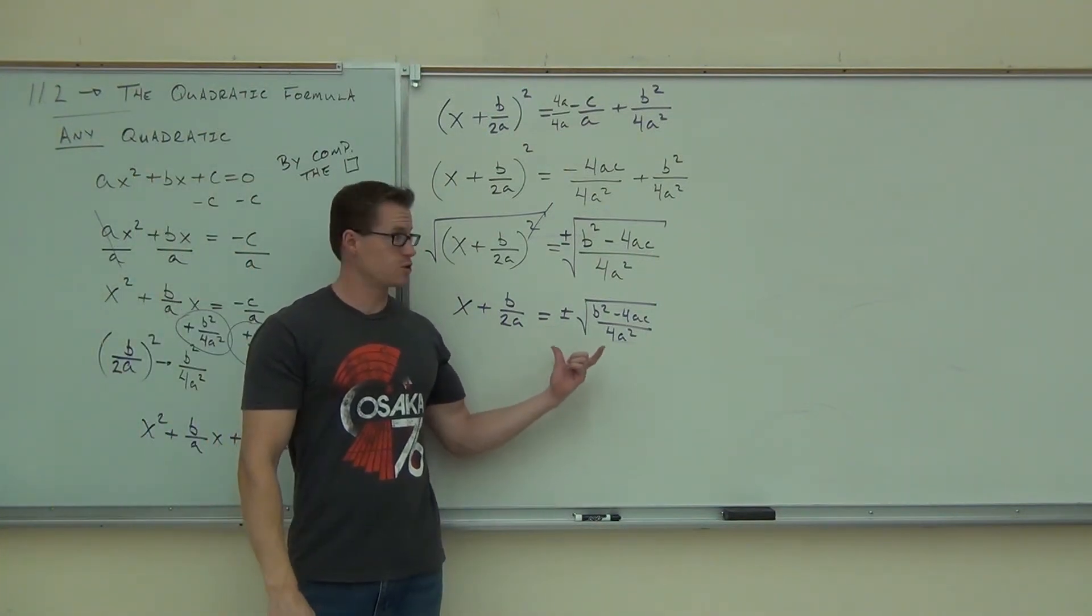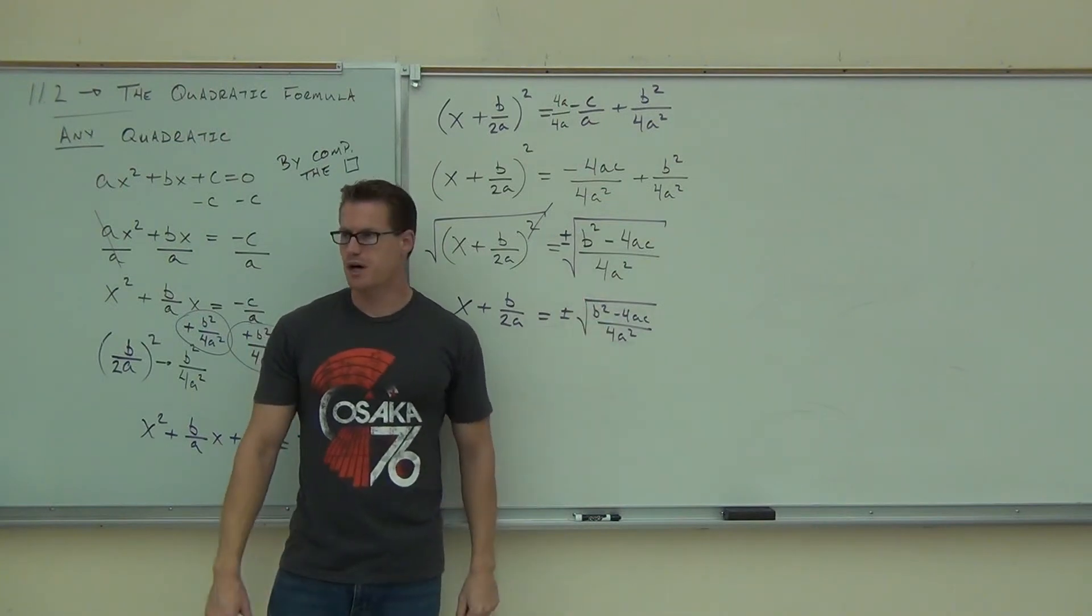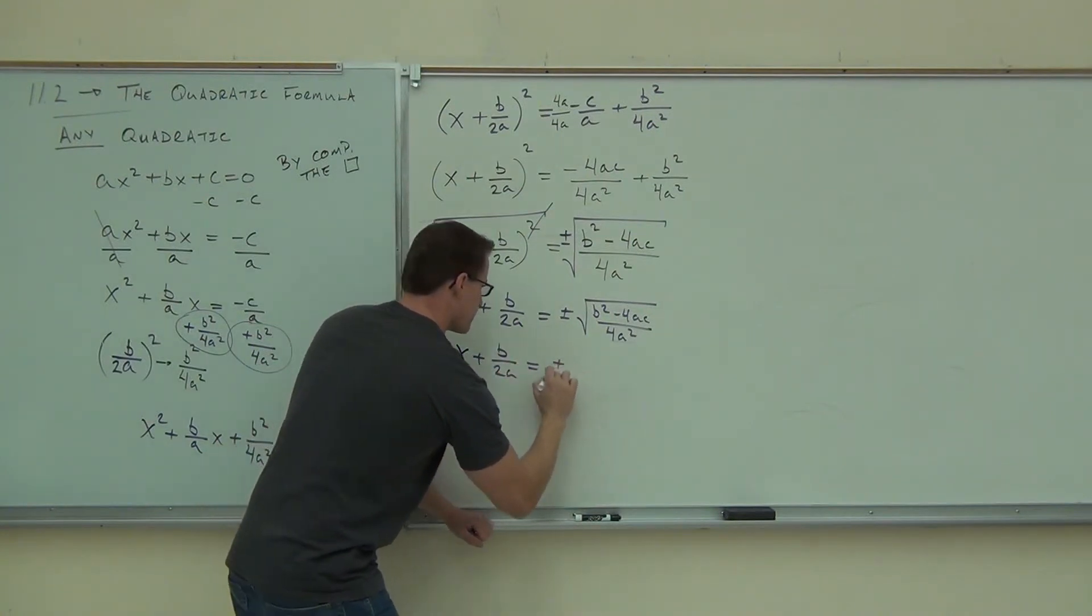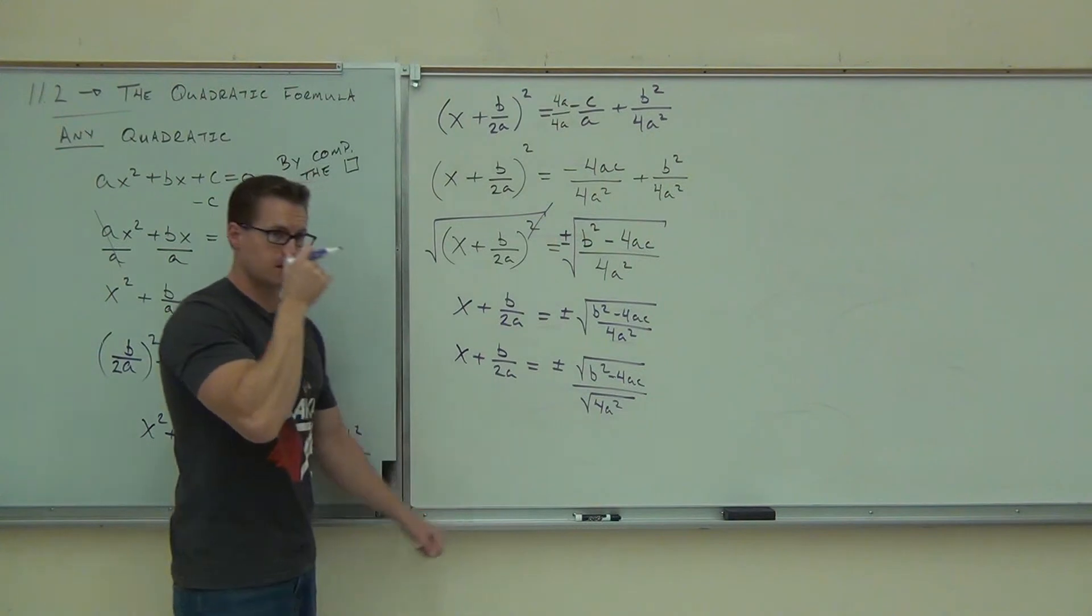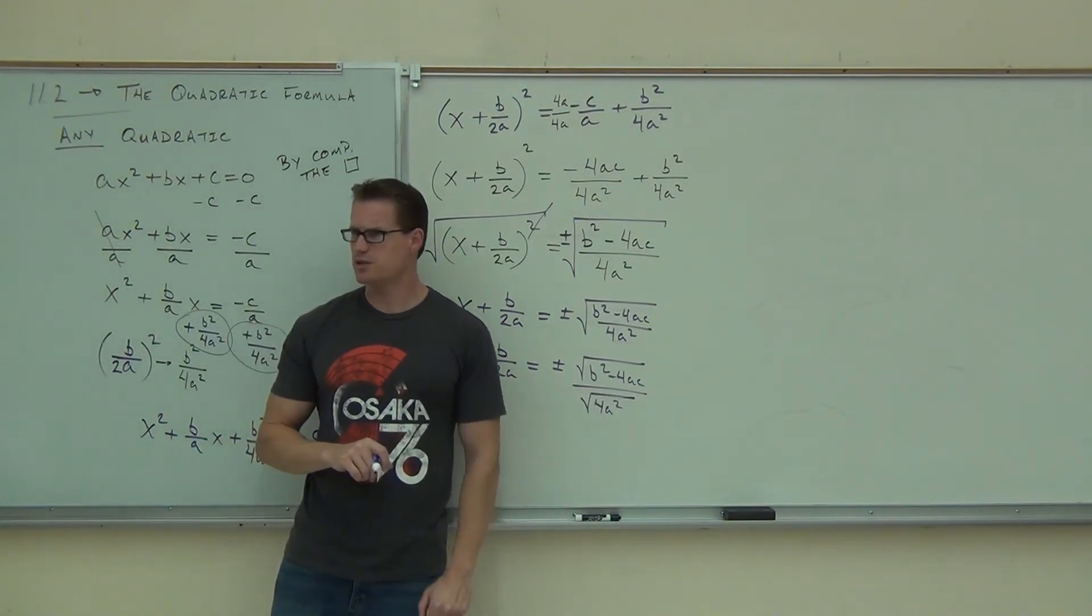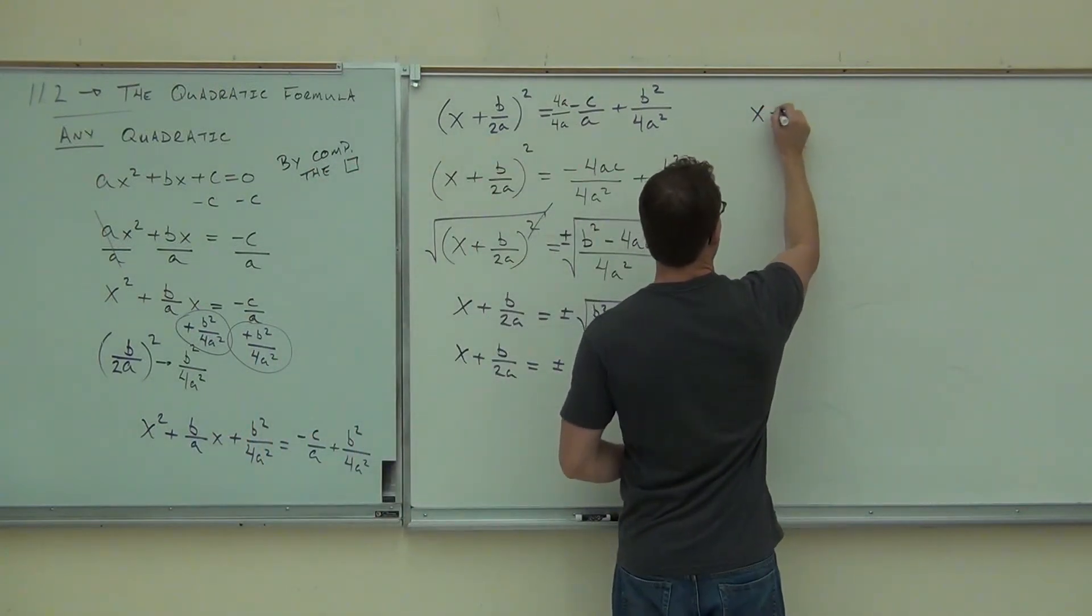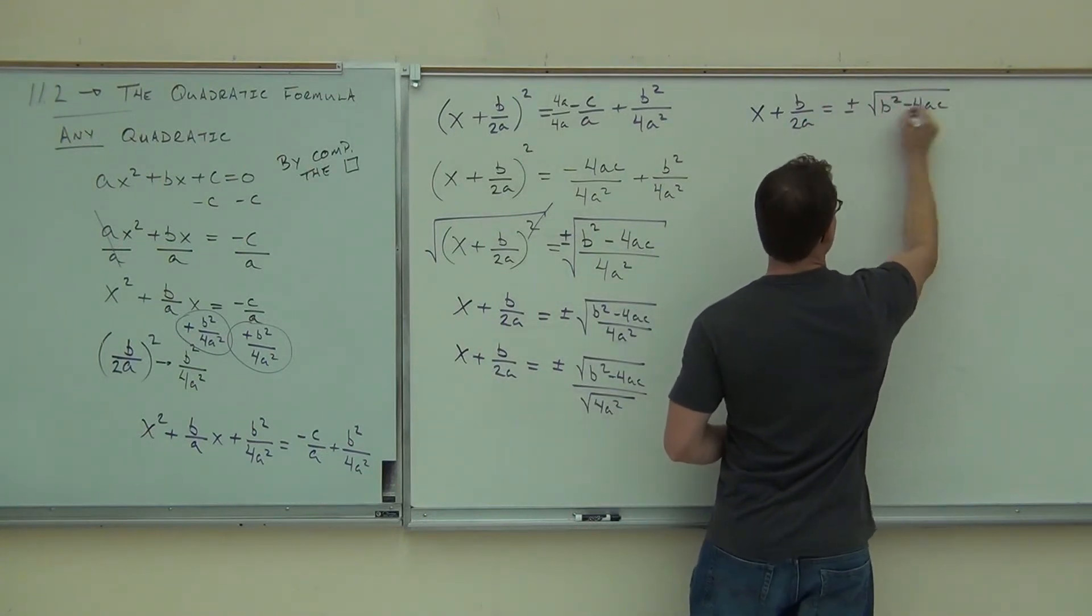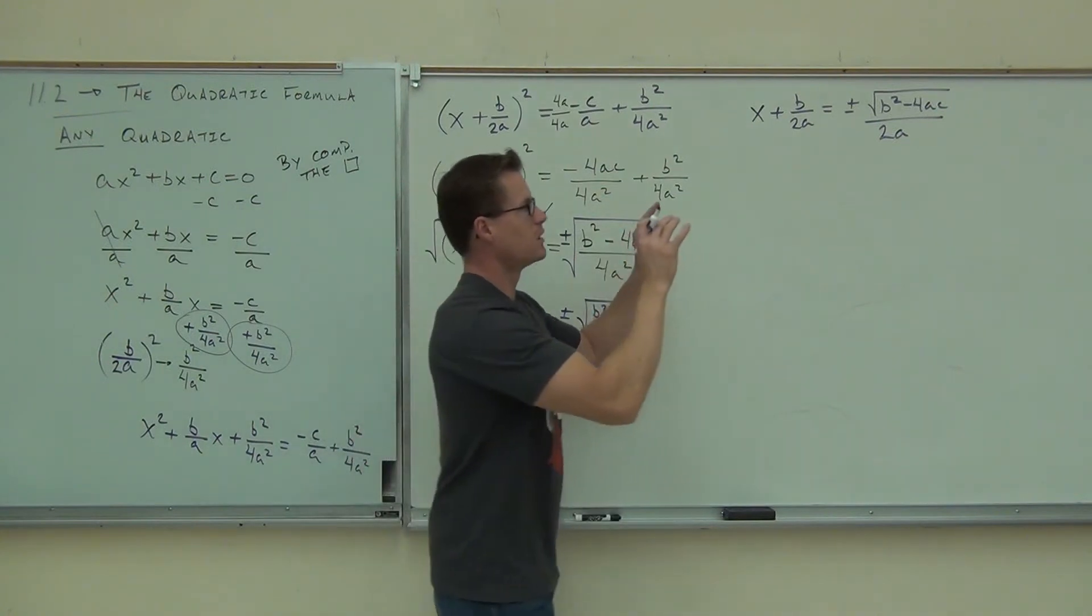So far, so good? Now, you're going to see something that we've done before. Just a little bit earlier. Right here on this side, I'm going to split this up as the square root of the numerator over the square root of the denominator. We've actually done that already today. I'm going to show that step to you, too. So I'm just splitting this up. What's the square root of 4A squared? How much is the square root of 4A squared?